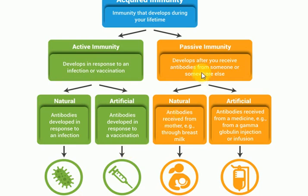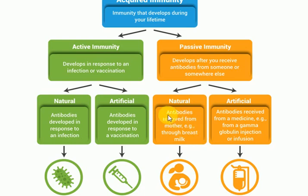Passive immunity develops when you receive antibodies from someone or somewhere else — from outside. It can be natural or artificial. Natural passive immunity is when antibodies are received from mother to child through breast milk. The antibodies are directly transferred from mother to the baby; the baby's body is not synthesizing the antibodies itself but receiving them naturally.